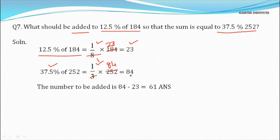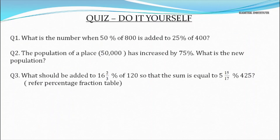What has to be added to 23 to make it 84? We subtract: 84 − 23 = 61. So 61 is the answer. With this we come to the end of the video — it's quiz time now! Do these sums yourself and send your answers in the comment box below. We look forward to your feedback. Thank you so much, bye!